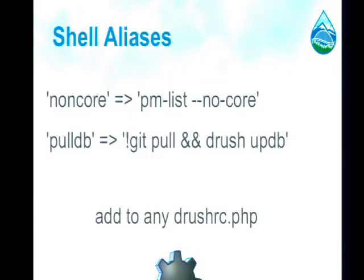Here's a Drush 5 innovation that I don't think a lot of people know about or use, so I want to mention it again. We added something called shell aliases to Drush. In your Drush RC file — your configuration file for Drush — you can set up a simple array of short names and what commands they might map to. This is completely analogous to Git aliases in Git's configuration file.